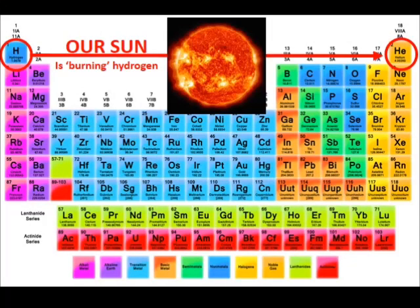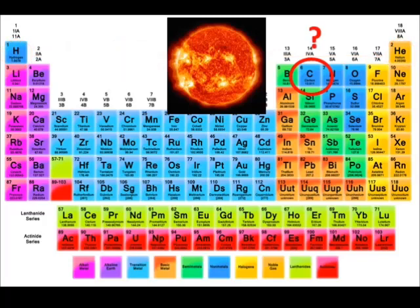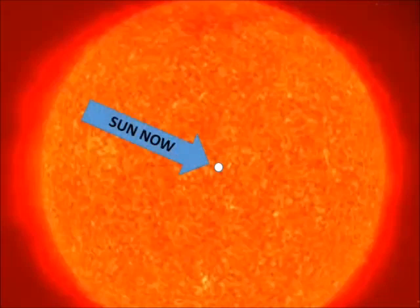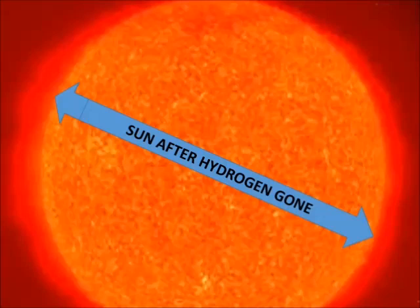So our sun is creating helium by burning hydrogen. This will happen when most of the hydrogen is used up, billions of years from now. At this point, it will begin to burn the helium and the sun will swell to a huge size, becoming what is called a red giant. In this picture, a little white circle in the middle is our sun at its present size. This will be our sun after the hydrogen is gone.